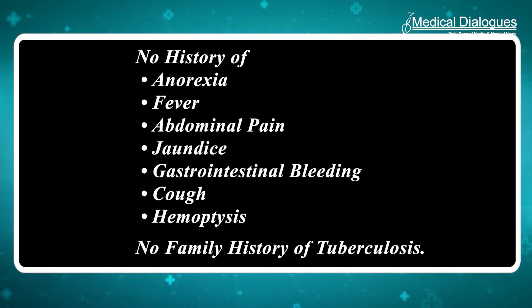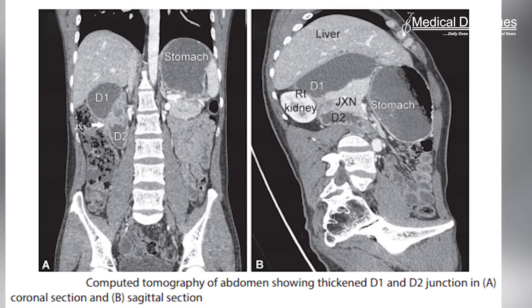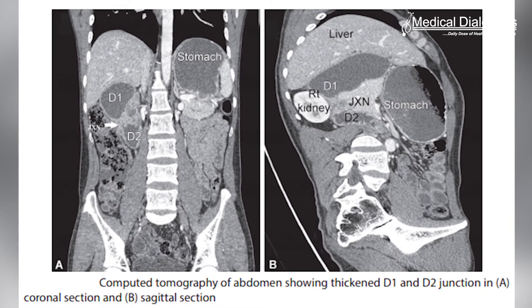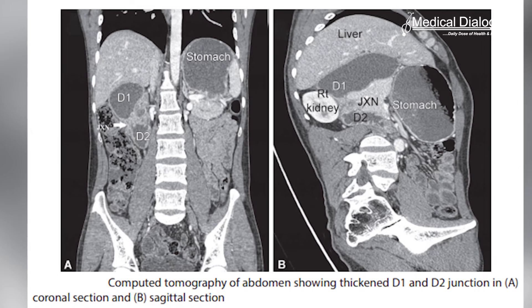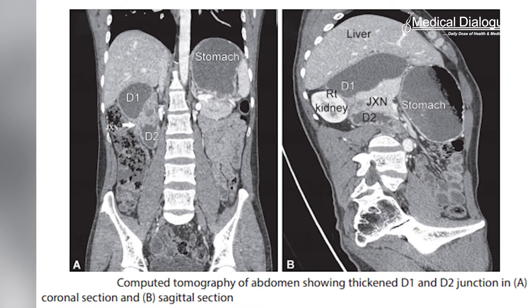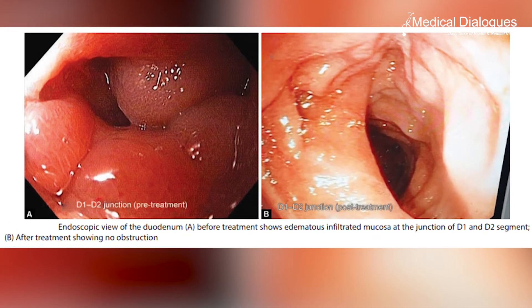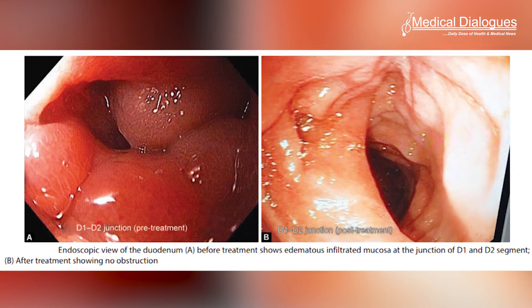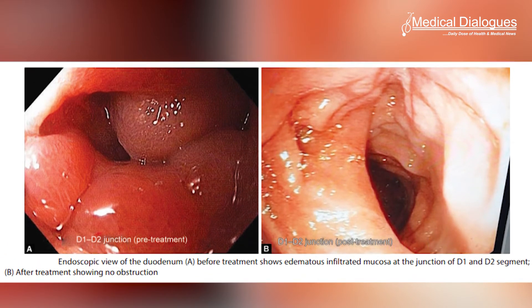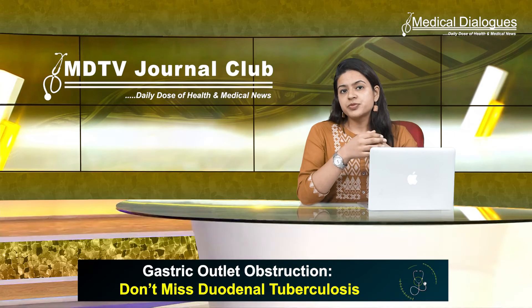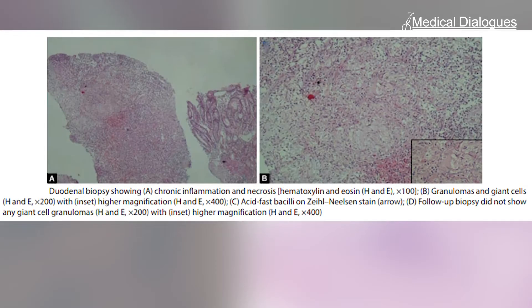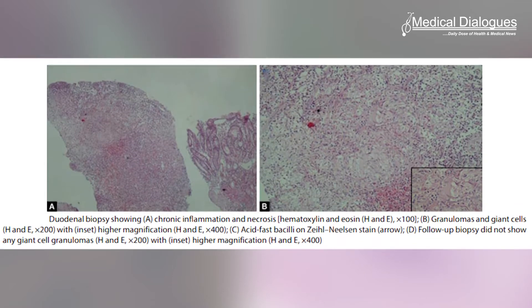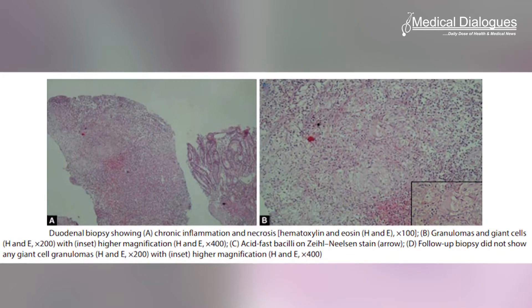There was also no history of tuberculosis. Contrast-enhanced computed tomography of the abdomen showed a thickened duodenum at the D1 and D2 segment junction. Upper gastrointestinal endoscopy showed edematous infiltrated mucosa in the duodenum at the D1-D2 junction. Eight biopsies were taken, and histopathological examination revealed chronic inflammatory infiltrate only.